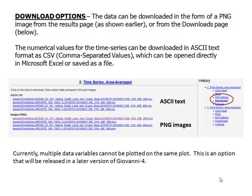Download options: the data can be downloaded in the form of a PNG image from the results page, as was shown earlier, or from the downloads page. The numerical values for the time series can be downloaded in ASCII text format as CSV comma-separated values, which can be opened directly in Microsoft Excel or saved as a file.